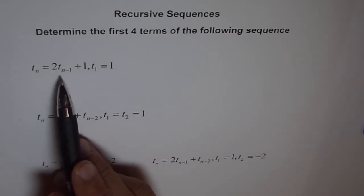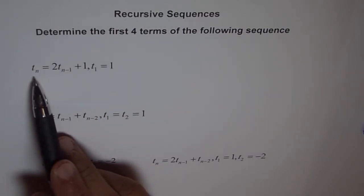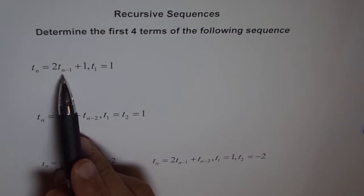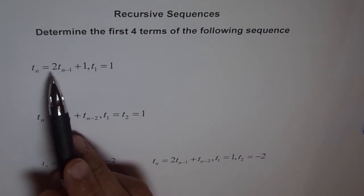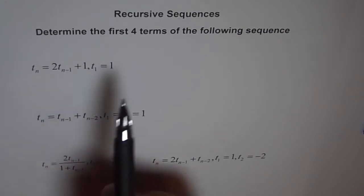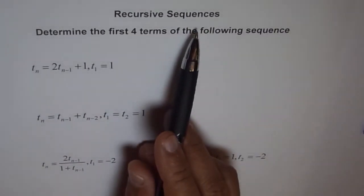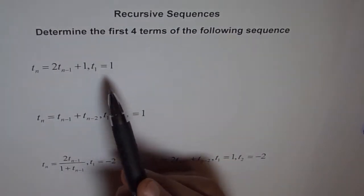If you observe, we are trying to find a value in terms of previous value. Tn-1 is the previous term number. So this kind of a formula, where we relate one term in terms of previous terms, is called a recursive sequence. These are examples of recursive sequences.